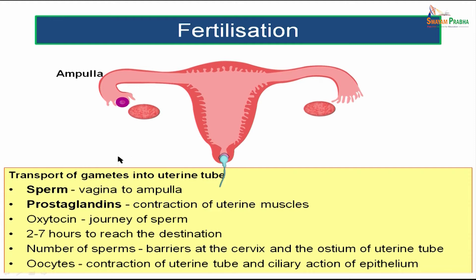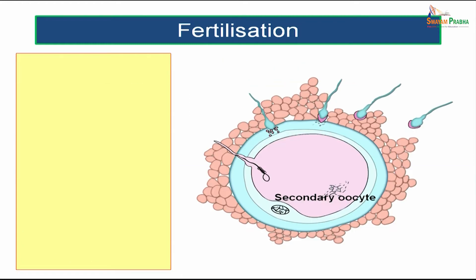The oocytes are actually sucked up into the uterine tube by the contraction of the uterine tube and the epithelial lining of the uterine tube. The oocytes will be sucked up into the uterine tube to reach the ampulla, and the sperms will be traveling through the vagina, the cervix, the body of the uterus, and finally reach the ampulla of the uterine tube.